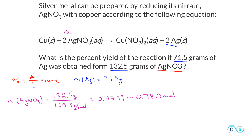We have 0.78 moles of silver nitrate. Based on our stoichiometry and mole ratios, how much silver will be produced from 0.78 moles of silver nitrate? The ratio is 2 to 2, which means every 2 moles of silver nitrate produces 2 moles of silver. So 0.78 moles of silver nitrate will produce 0.78 moles of silver.